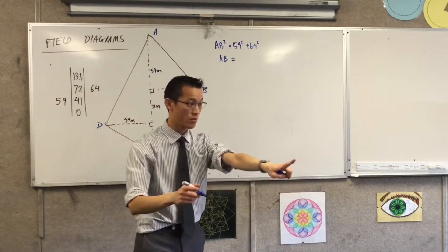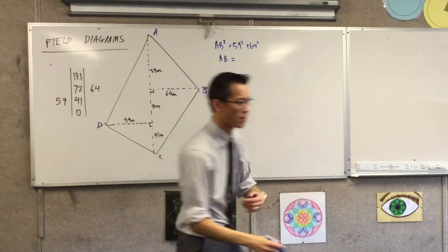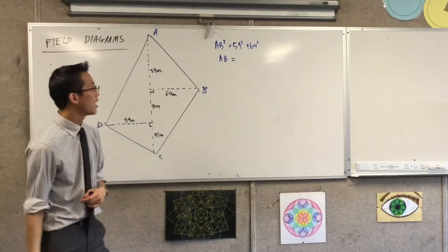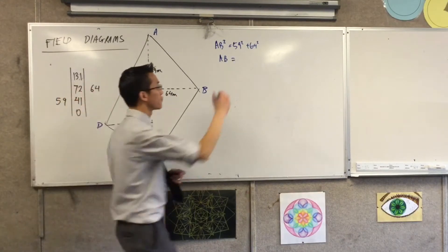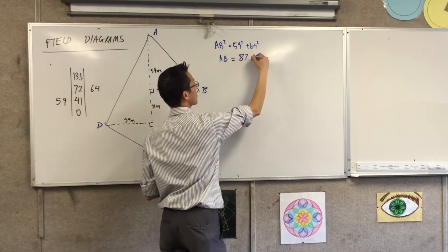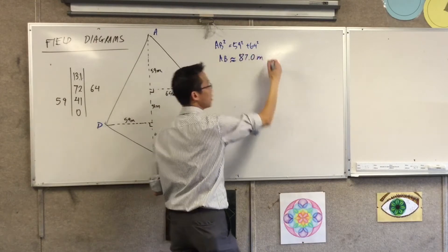Wait, have you taken the square root? Oh, yeah, like that? Can you take the square root of that? Oh, sorry. Give me one. 87.0. Approximately.